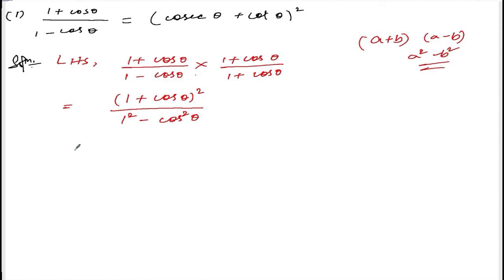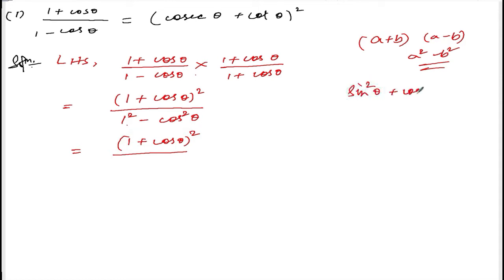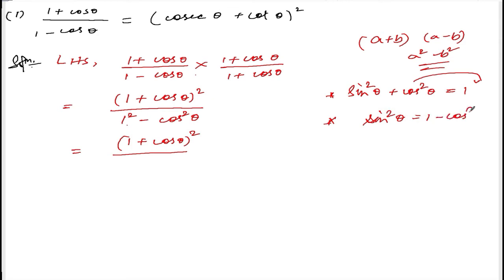The next step is to keep 1 plus cos theta whole square in the numerator, and the denominator becomes 1 minus cos square theta. There is another formula: sin square theta plus cos square theta is equal to 1. Transferring cos theta to the other side gives sin square theta is equal to 1 minus cos square theta.